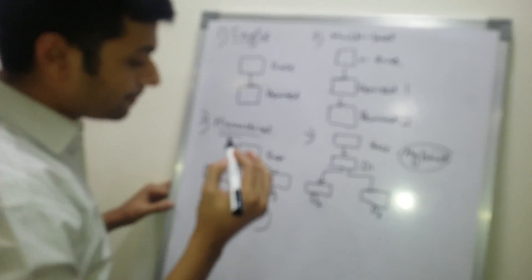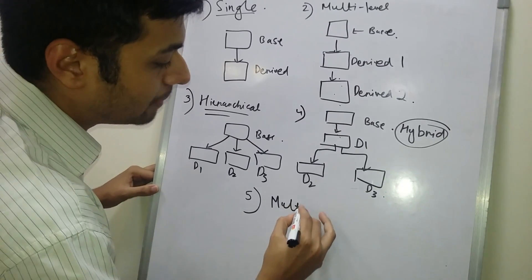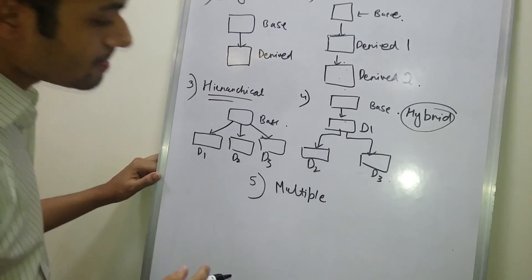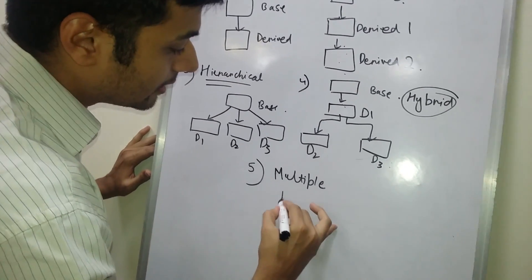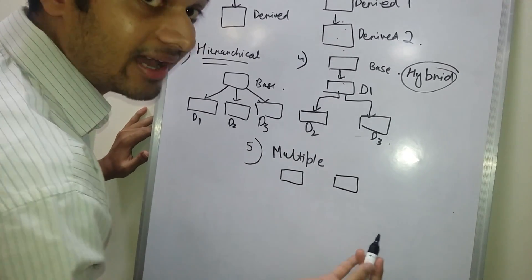The fifth one is multiple, multiple level. In multiple level, there is one base class, there is another base class.